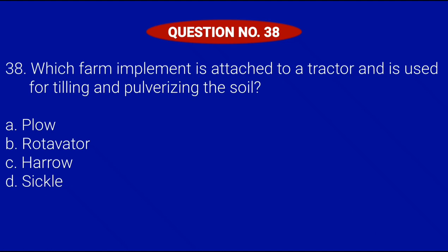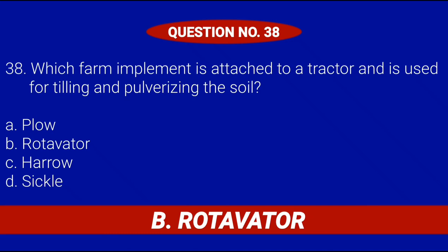Question number 38. Which farm implement is attached to a tractor and is used for tilling and pulverizing the soil? Letter A, Plow; Letter B, Rotivator; Letter C, Harrow; or Letter D, Sickle. Correct answer is Letter B, Rotivator.